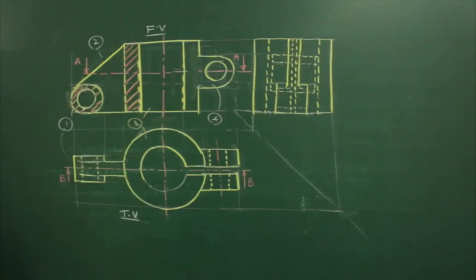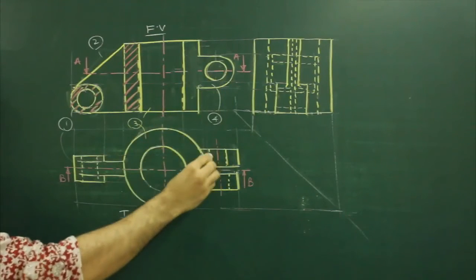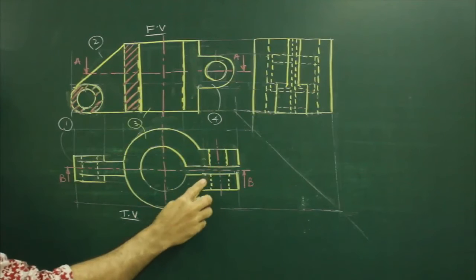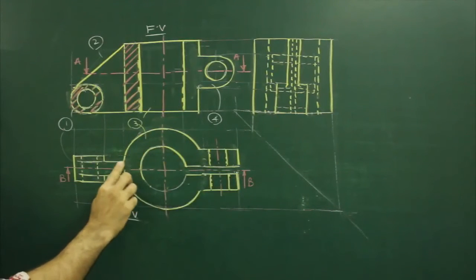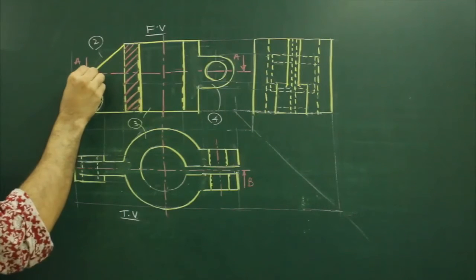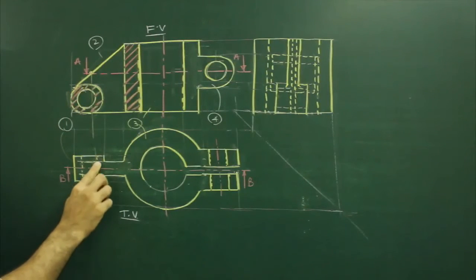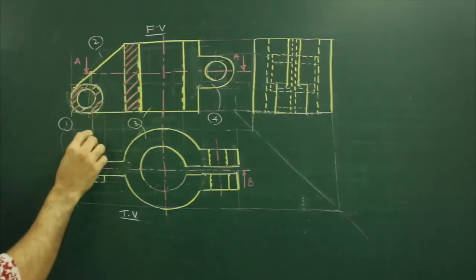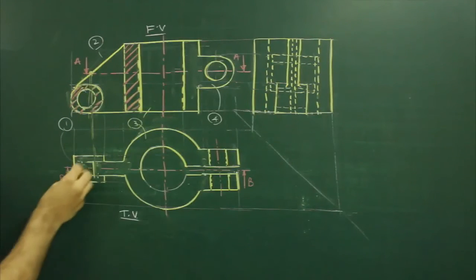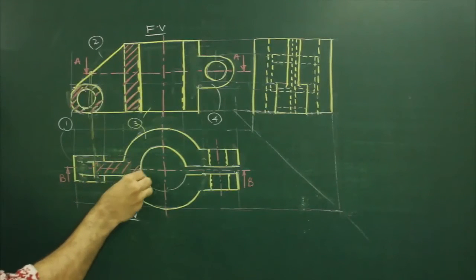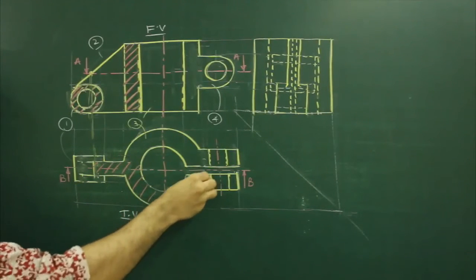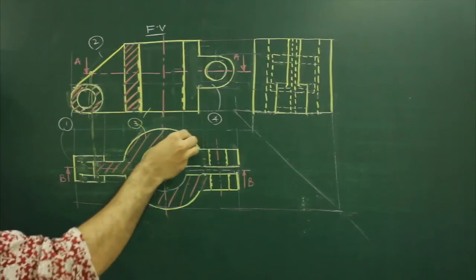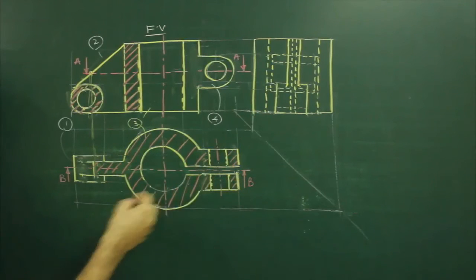Now when we see the sectional top view, the cutting plane line is passing through this. So what will happen? This will come down because it is passing through this. This will come down. This will go away. This will go away. It will become an object. This will come down. It is cutting over here, so we need to project from here. So hatching will come in this area.